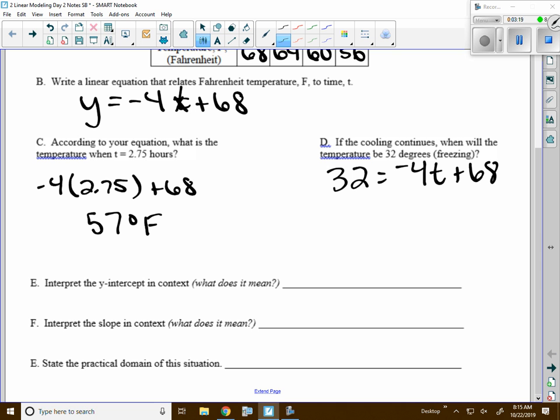You should be solving for t. That doesn't require conversation. Can we agree with nine? Nine what? What's our label? Hours. So it takes nine hours for that temperature to drop to freezing, which is 32 degrees.